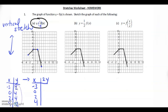Every single time we deal with the y, we multiply it by 2. Take this entire column and double it: 2 times 2, 4 times 2, 4 times 2, negative 2 times 2. Now we graph it. This 2 stretches to 4, this 4 stretches to 8, this 4 stretches to 8, and this negative 2 stretches to negative 4.